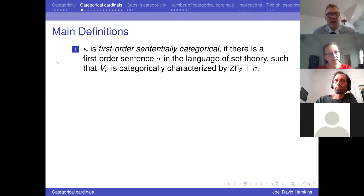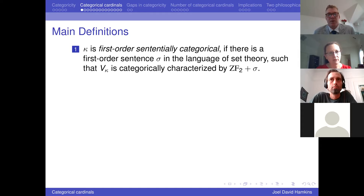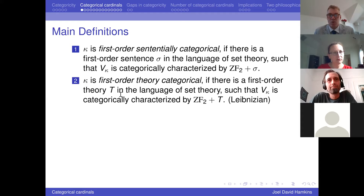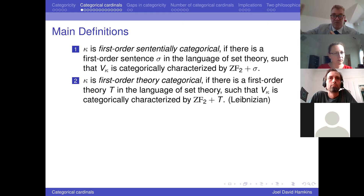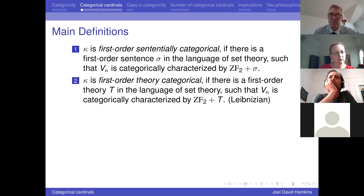The main definition: kappa is first-order sententially categorical if there's a first-order sentence sigma such that V_kappa is categorically characterized by this theory — in other words, kappa is the only inaccessible cardinal such that V_kappa satisfies sigma. First-order theory categorical is the same except we allow a whole first-order theory. You can think of this as a Leibnizian notion of discernibility: kappa is theory categorical means that for any other candidate V_lambda, there's some sentence true in V_kappa that isn't true in V_lambda.